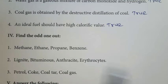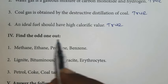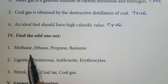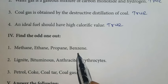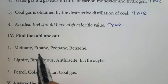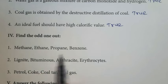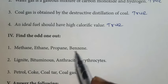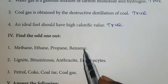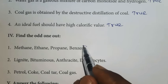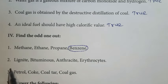Fourth part: find the odd one out. First one — methane, ethane, propane, benzene. Methane, ethane, and propane all belong to acyclic compounds, that is open-chain compounds. Benzene is a cyclic compound. So the odd one out is benzene.